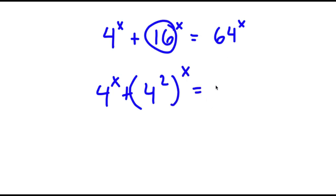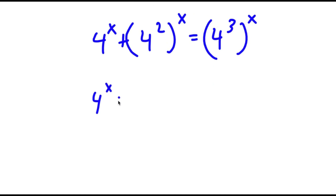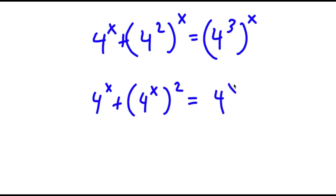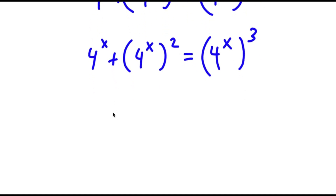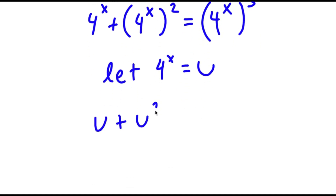And 64 I can rewrite as 4 to the power of 3. I'm going to rewrite this as 4 to the power of x squared. So 4 to the power of x plus 4 to the power of x squared is equal to 4 to the power of x to the power of 3, because I can switch the places of these two. Now I'm going to let 4 to the power of x equal to the variable u. So now I have u plus u squared is equal to u to the power of 3.